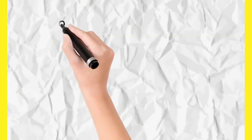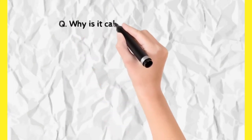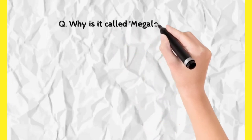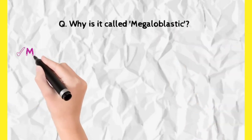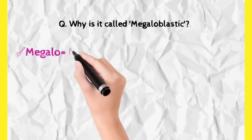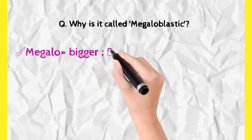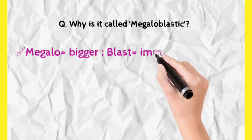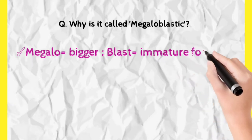Now let us see why it is called megaloblastic anemia. The word 'megaloblast' can be divided into two parts: 'megalo,' which means bigger in size, and 'blast,' which is the term used for immature cells. 'Cyte' is the word used for mature cells. Here, the immature RBCs are bigger in size, which is the reason why it is known as megaloblastic anemia.